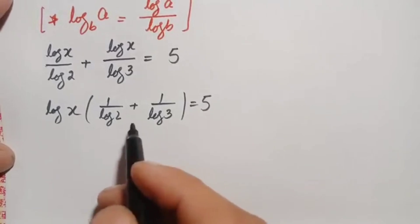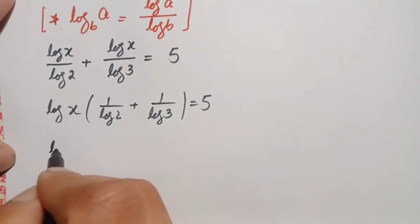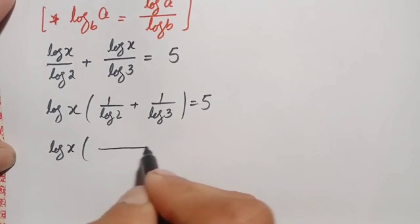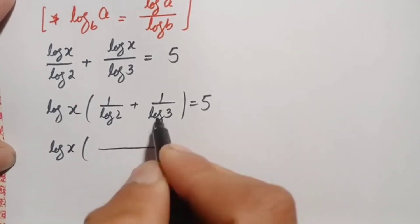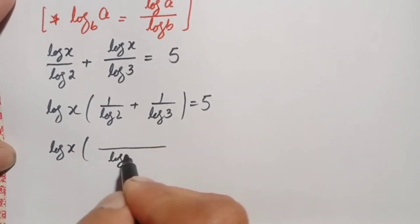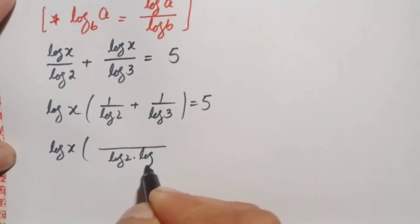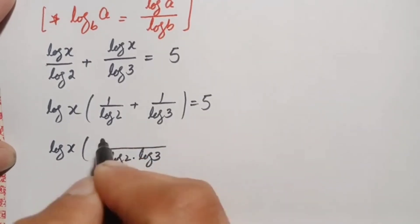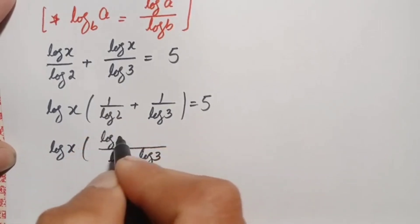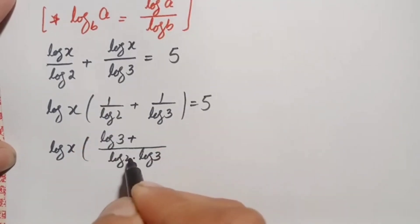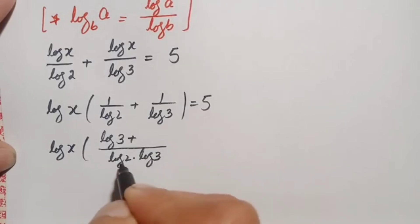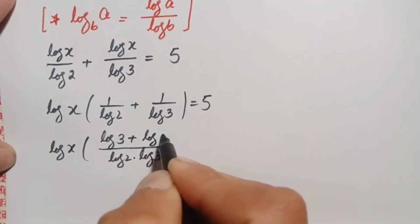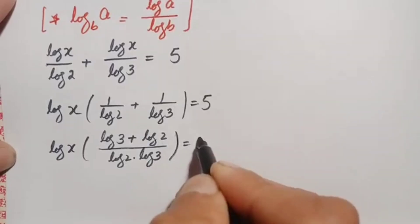We take the sum of these two fractions. The common denominator is log of 2 times log of 3. Dividing by log of 2 gives log of 3, and dividing by log of 3 gives log of 2. So the numerator becomes log of 3 plus log of 2, giving us log of x times (log of 3 plus log of 2) over (log of 2 times log of 3) is equal to 5.